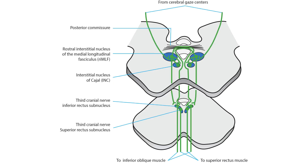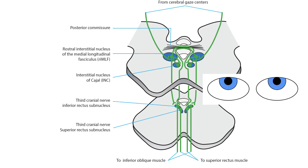To complete upward eye movement, the signals from both RIMLFs burst across the posterior commissure and travel caudally to the superior rectus and inferior oblique subnuclei of the third cranial nerve. These nuclei send the burst signal out to the superior rectus and inferior oblique muscles to drive the eyes upward.